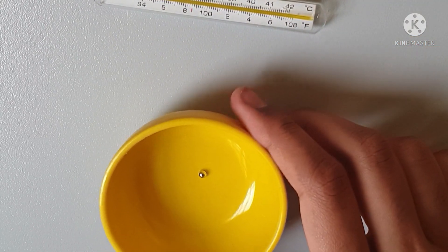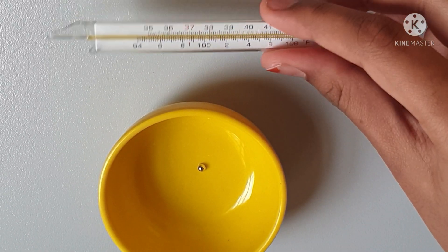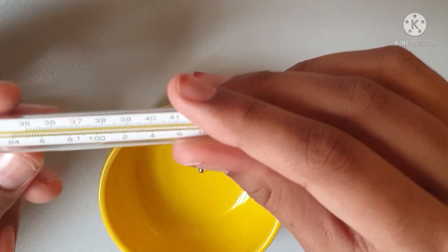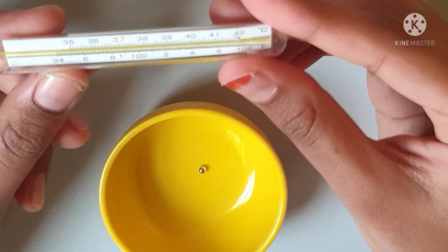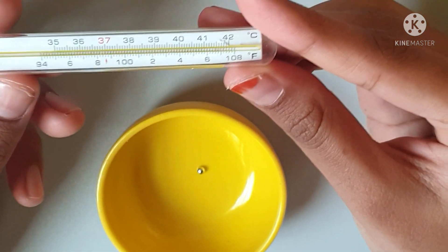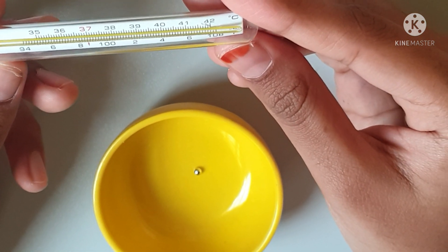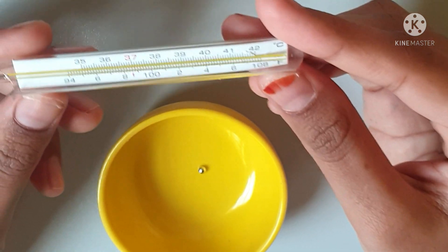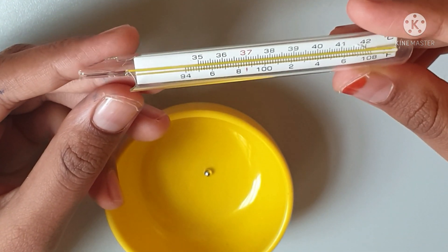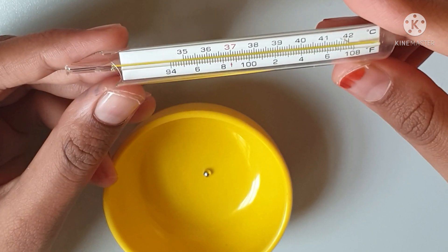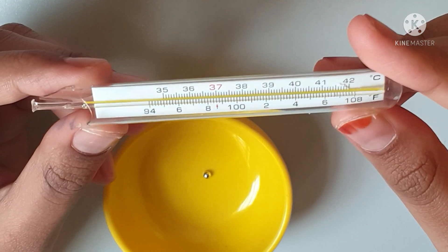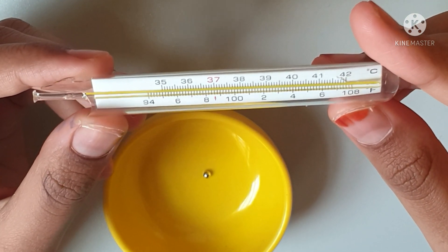There's still some mercury left inside the thermometer. Here you can see the reading - this is in Celsius and this is Fahrenheit. In Celsius, 37 is the normal temperature, and in Fahrenheit, 98 degrees is normal. If you cross that temperature, that means you have a fever.